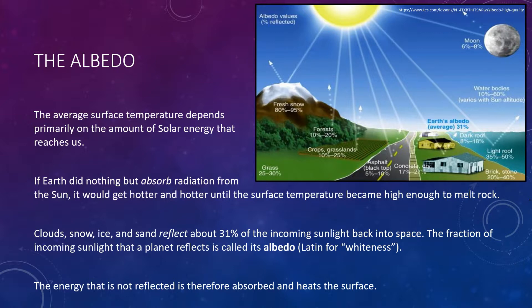Note that a planet's reflectivity depends on its composition and color. In general, darker colors reflect less light. As you can see in this figure, surfaces such as asphalt and dark rooftops will reflect very little light, anywhere between 5% and 18%, whereas a much whiter surface, such as that provided by snow-covered ground, reflects a significant amount of solar energy, anywhere from 80% to 95%. The energy that is not reflected — the other 69% — is therefore absorbed, efficiently hitting the surfaces.